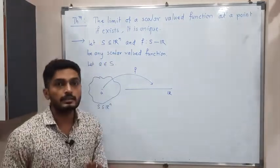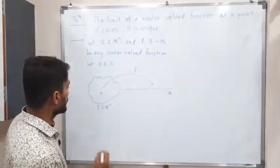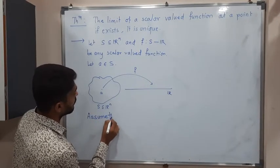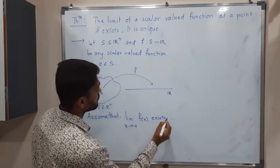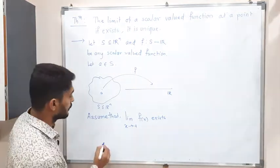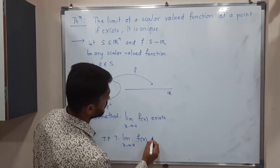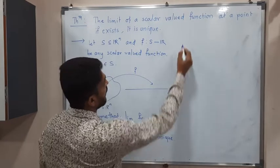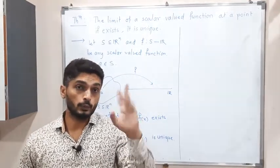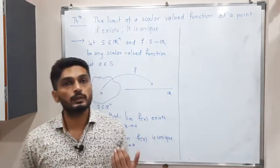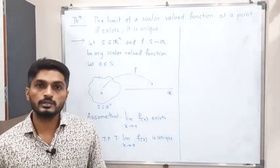We consider that f has a limit at a, and we have to prove that this limit is unique — meaning only one limit value exists. In mathematics, when we have to prove something is unique, most of the time we assume it is possible that there are two values, solve a few steps, arrive at a contradiction, and then declare it is not possible — hence unique.